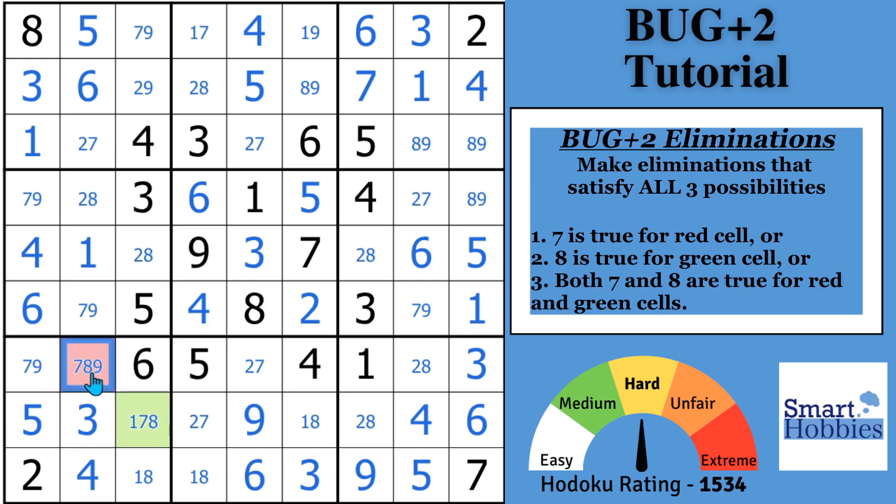Instead, since this is a seven, or this is an eight, or both is true, we know if seven's there, this could never be a seven. Because either that's a seven, and I would eliminate a seven from this cell, or it's not a seven, this has to be an eight.